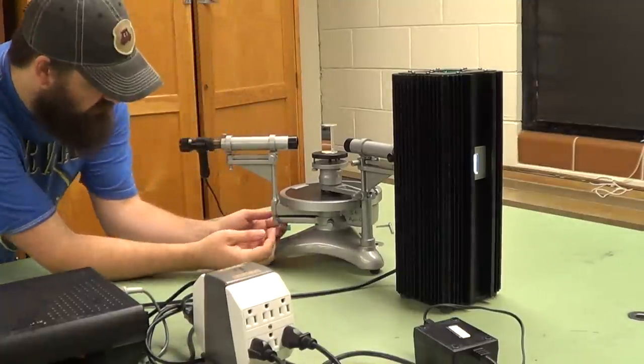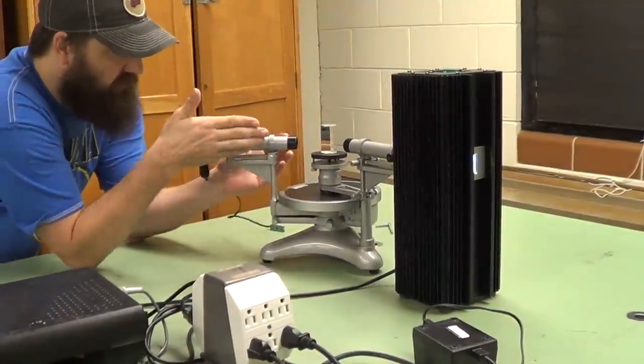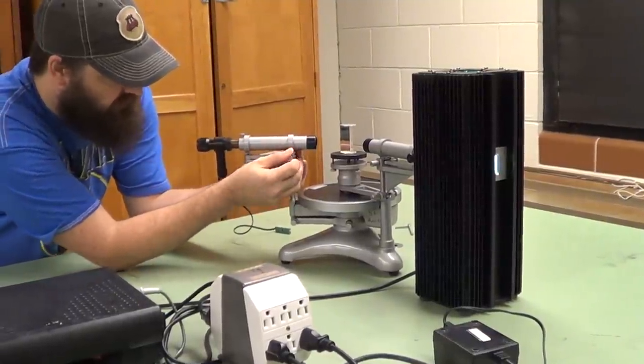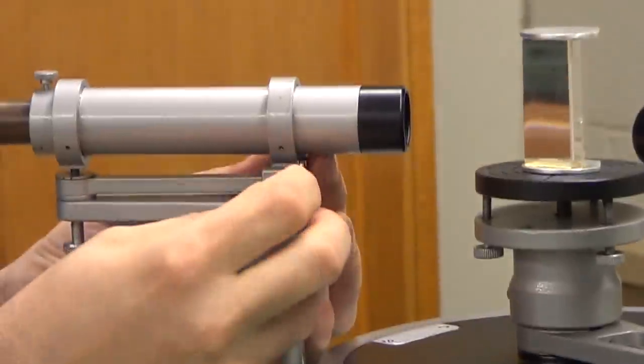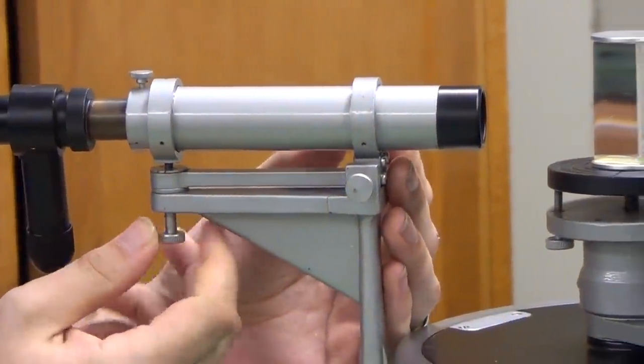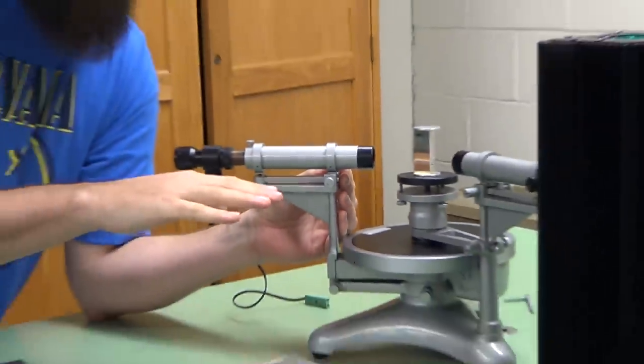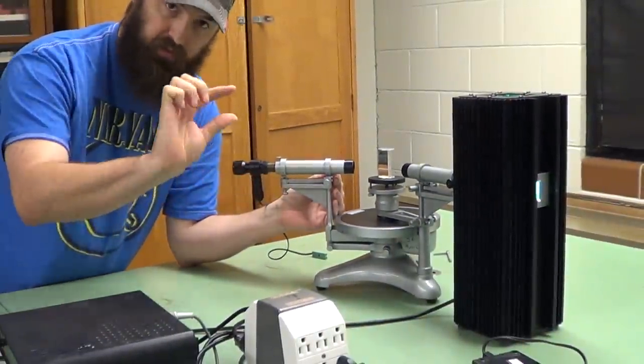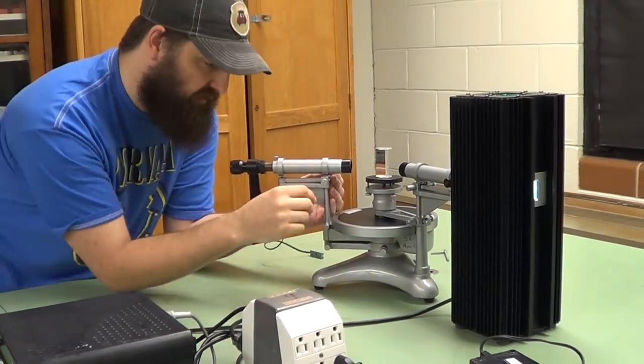There are also a couple other adjustments we can make. To align your telescopes, you can use this screw to move the scope left and right. This screw will move the scope up and down. This will help you get your image to where you need it to be so that you can see all of the lines in the spectrum.